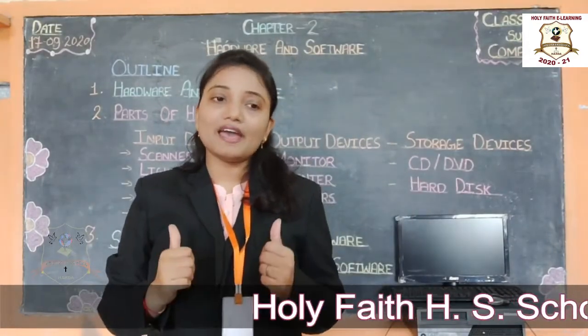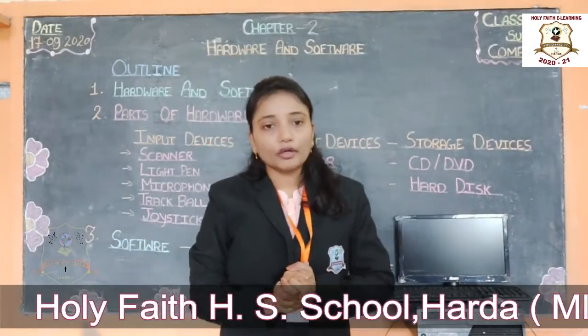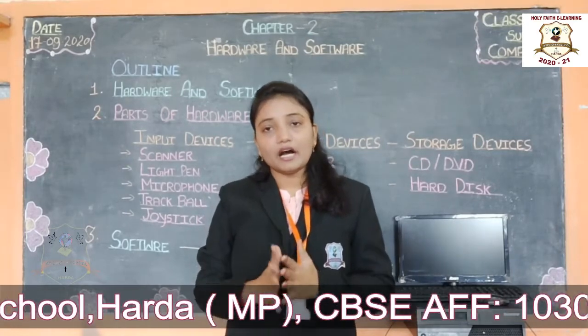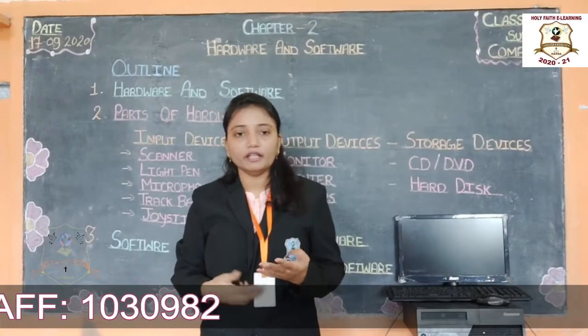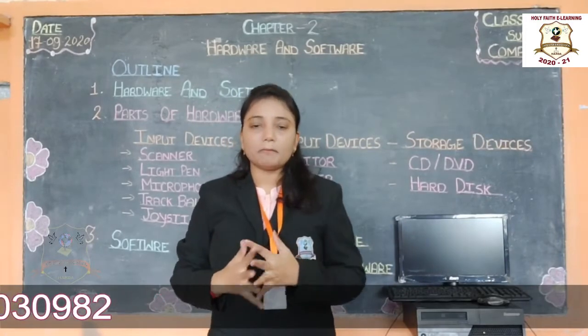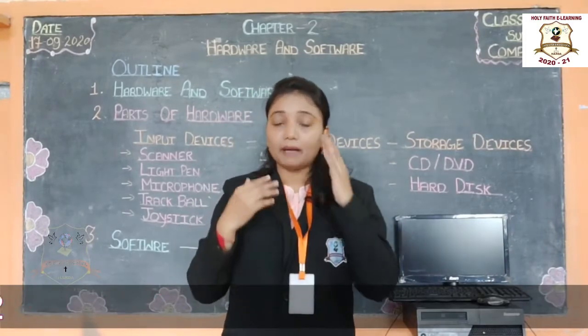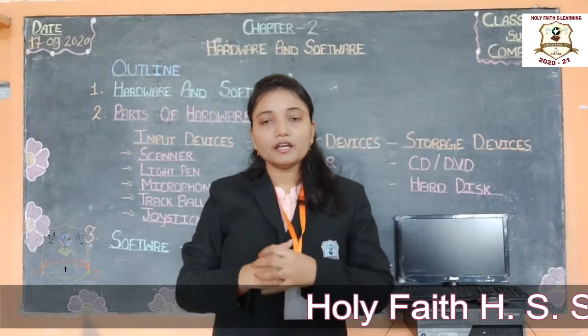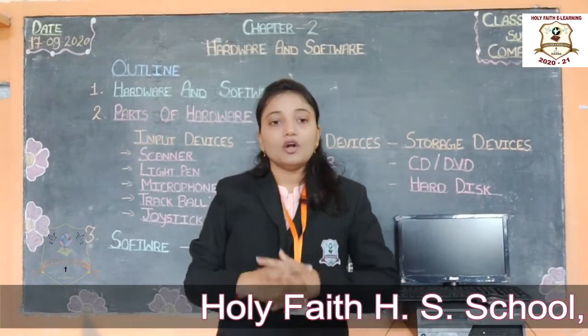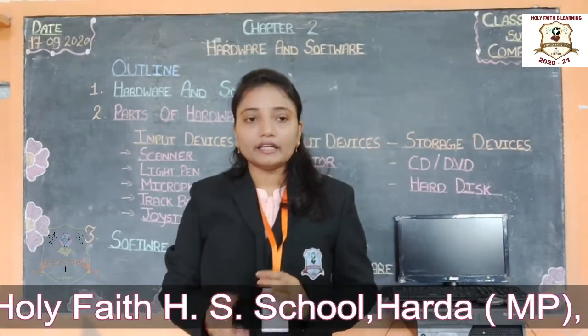Now let's start with an example: a human body. A human body consists of different parts. The outer parts of a body are visible, but the parts like brain, heart, and lungs which are inside cannot be seen.